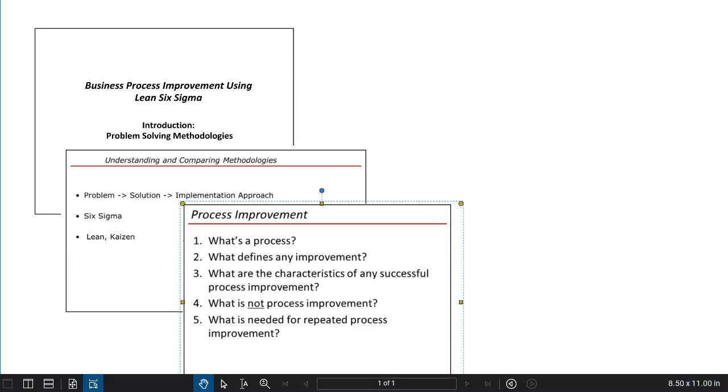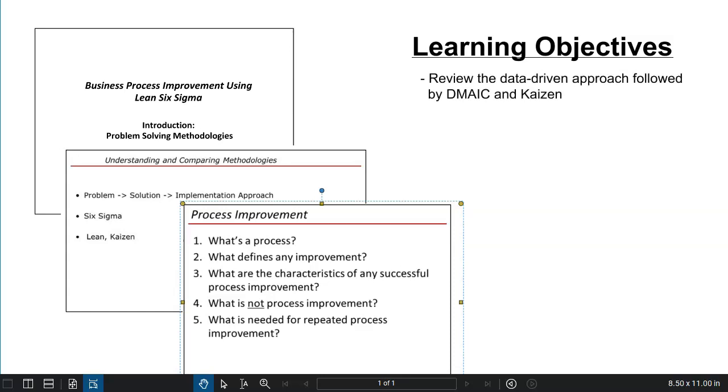In this video, we're going to continue our discussion and analysis of problem-solving methodologies and process improvement. In particular, the learning objectives will be to review the problem-solving approach used in both DMAIC and Kaizen event process improvement activities.